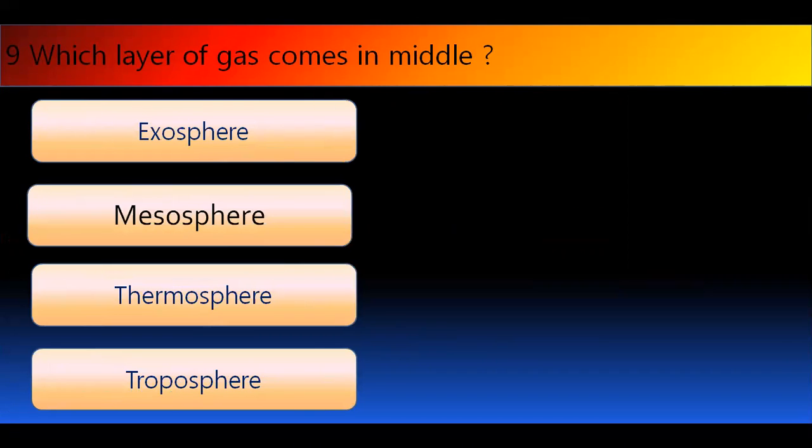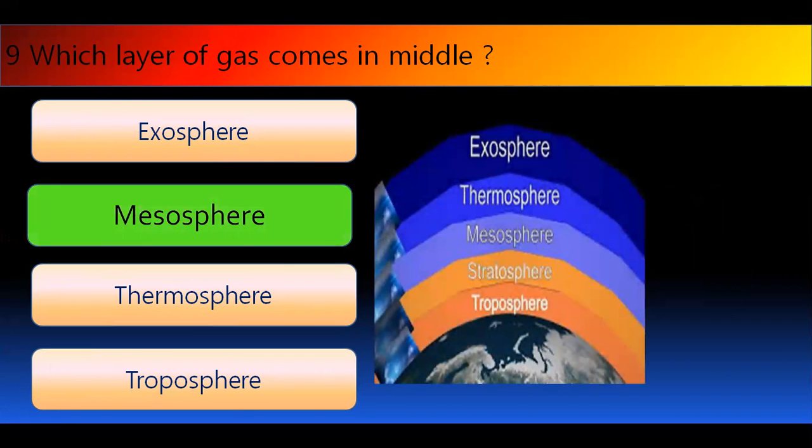Question number 9. Which layer comes in middle of the atmosphere? The layers of gases are Exosphere, Mesosphere, Thermosphere, Troposphere. Out of these, which one comes in the middle? And the right answer is Mesosphere. See the picture. Troposphere, then Stratosphere, then Mesosphere, Thermosphere, and in the last is Exosphere.